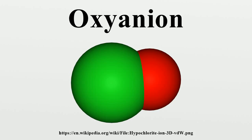Instead, carbonate and nitrate have a trigonal planar structure with pi bonding between the central atom and the oxygen atoms. This pi bonding is favored by the similarity in size of the central atom and oxygen. The oxoanions of second row elements in the group oxidation state are tetrahedral.